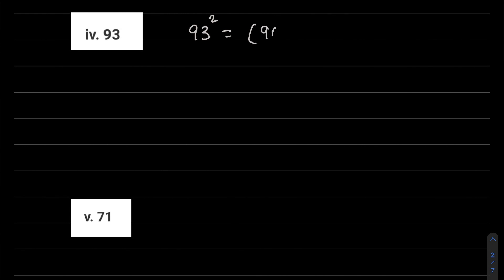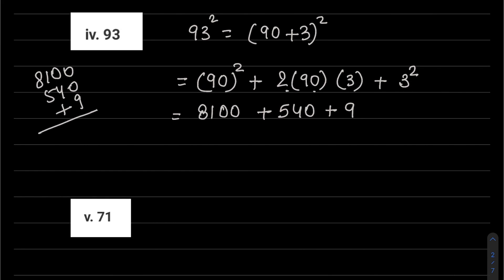Fourth part: 93. That is 90 plus 3 whole squared. So 90 squared - a plus b whole square is a squared plus 2 into a into b plus b squared. So 90 squared is 90 into 90, which is 8100. 2 into 90 is 180. 180 into 3 is 540. And 3 squared, 3 into 3, is 9. So adding all these: